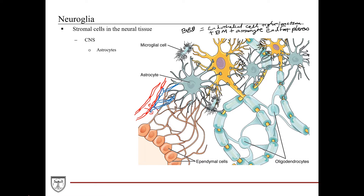Another class of stromal cells in the neural tissues are the oligodendrocytes. Within the central nervous system, it's the oligodendrocytes that are responsible for myelinating the axon fibers. What's unique is that oligodendrocytes can myelinate more than one segment of different axons by sending out multiple projections, each of which wraps around a region of the axon. This is quite different from the Schwann cells in the PNS, where the entire cell wraps itself around a segment of the axon.